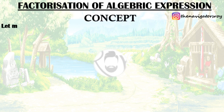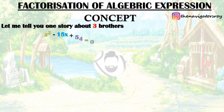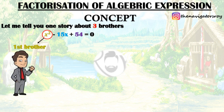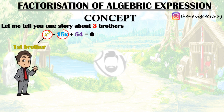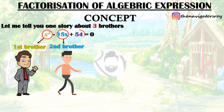We will clear this through a story. There are three brothers. I have given terms like x squared, which is the first brother. This is a quadratic equation. The second term is 15x, which is the second brother. And the last term is 54, which is the third brother.